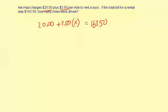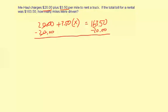Solving this algebraically, we want to get X by itself, so we subtract 20 from both sides. That makes the 20 go to 0, and then we have 3.50X equals — after subtracting — 143.50.